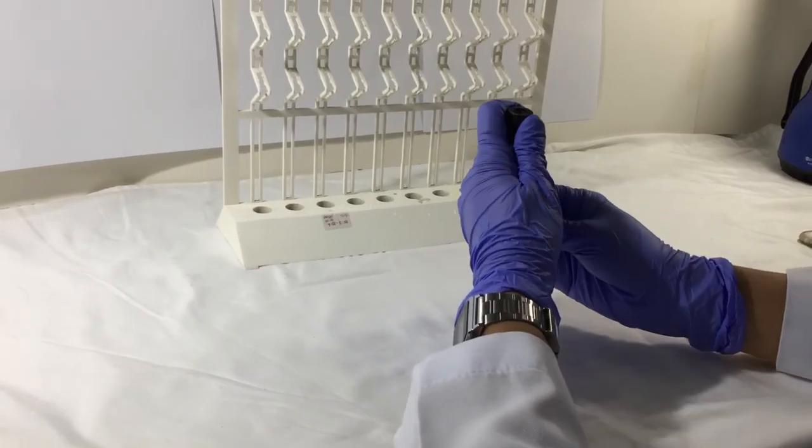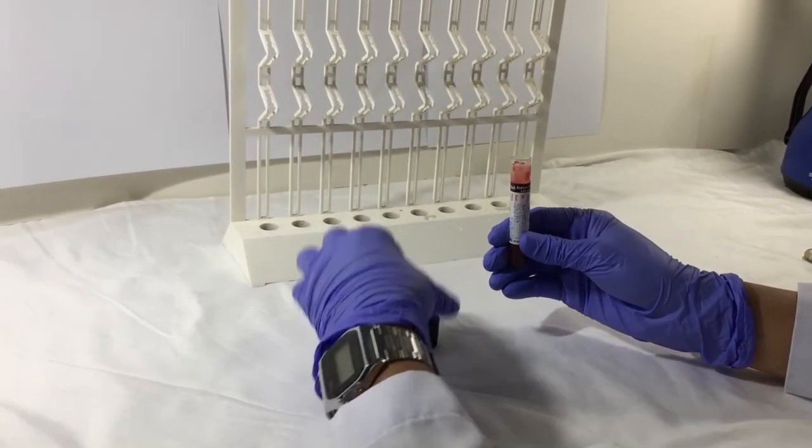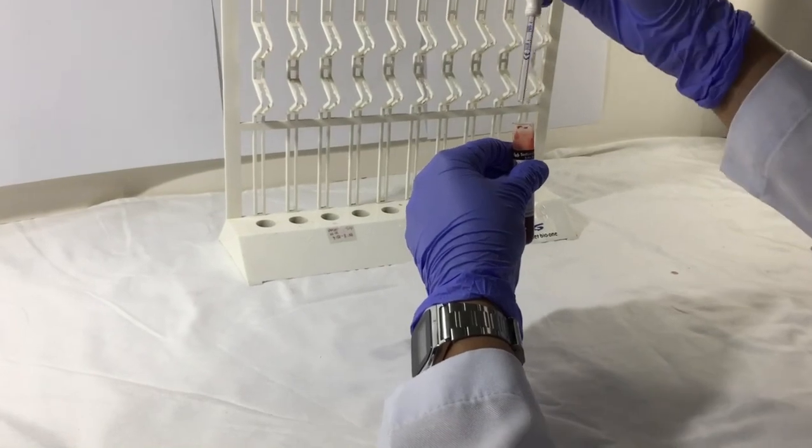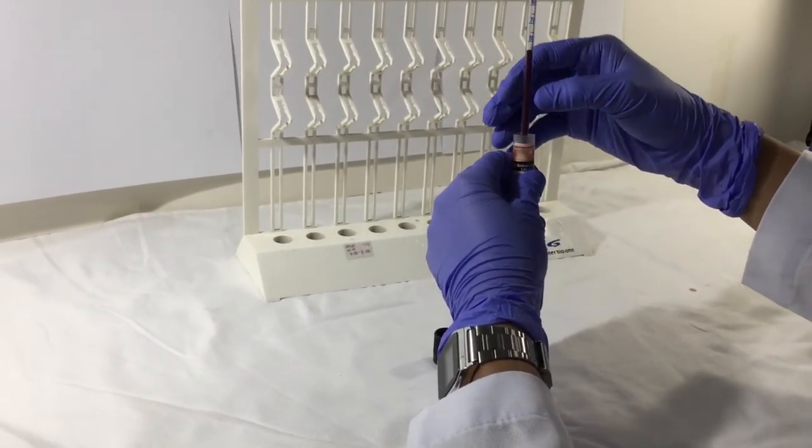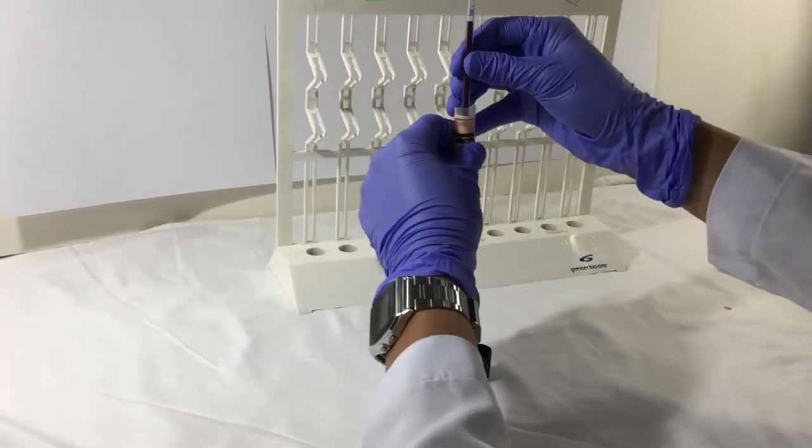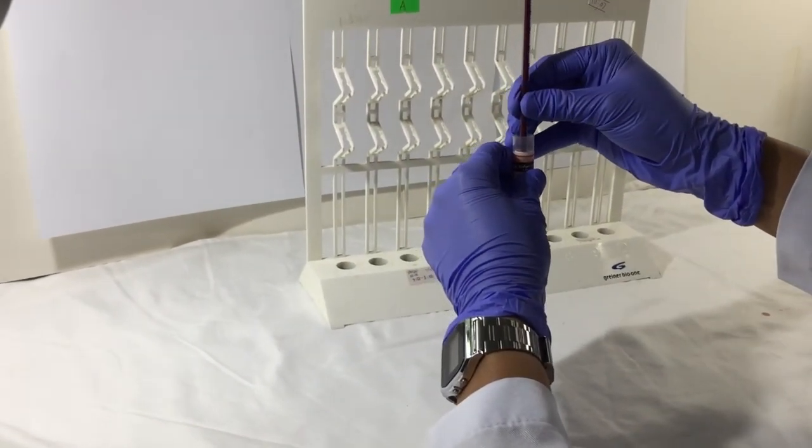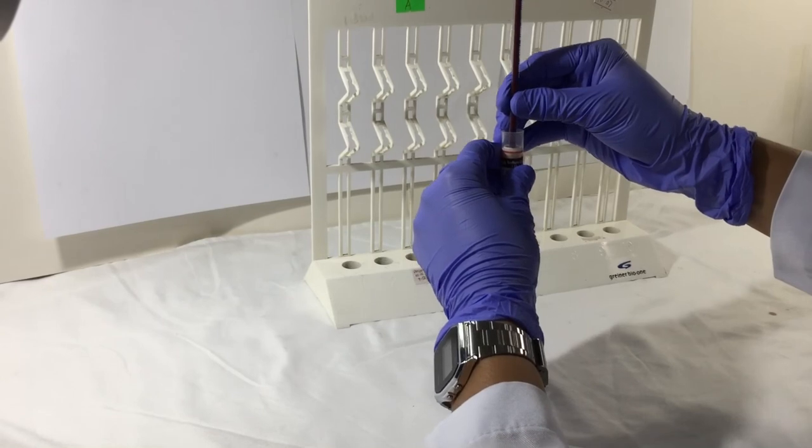Next, remove the cap of the vacutainer tube. And then, place the Westergren tube into the vacutainer tube and wait until the blood reaches the zero mark. Make sure that air bubbles are not present inside the Westergren tube.